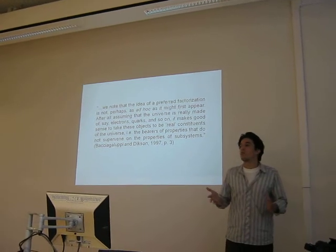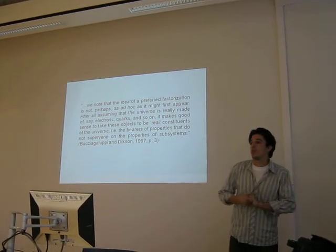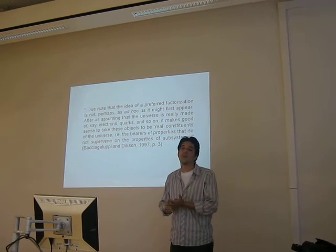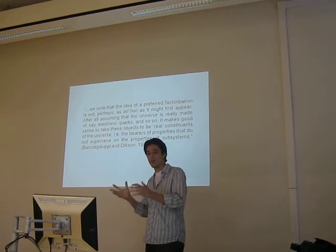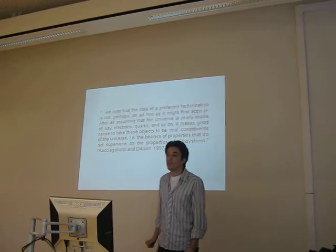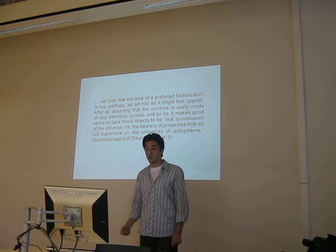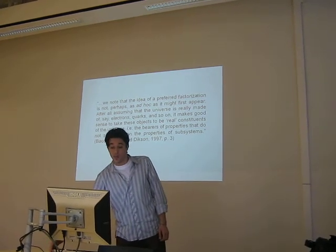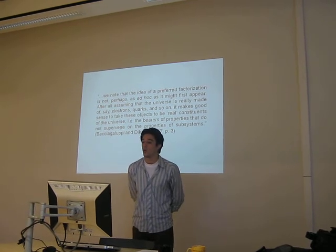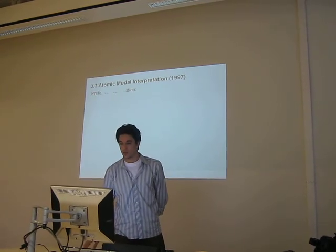This is the line of the so-called modal interpretation with semantic probabilities. There is another line, which appeared due to certain no-go theorems in modal interpretations, related to Bacigaluppi-Dickson's interpretation. Comparing them with Kochen-Dieks: they claim that the idea of a preferred factorization is not as problematic as it first appears. After all, assuming that the universe is really made of, say, electrons, quarks, and so on, it makes good sense to take these objects to be real constituents of the universe. This is the barrier of properties that do not supervene on the properties of subsystems — the idea being that of a preferred factorization.